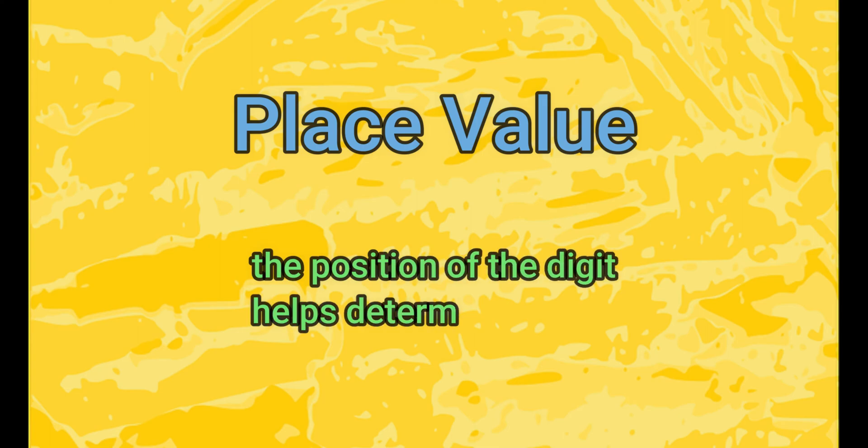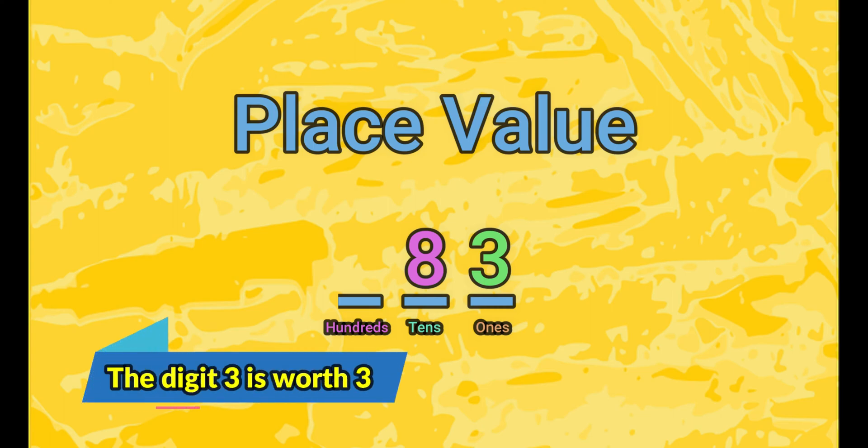Place value refers to how much each digit of a number is worth. The position of the digit matters a great deal and determines its value. For example, if we look at the digit 3, it can have different values depending on where it's placed in a number. In the number 83, the 3 is only worth 3 because it's located in the ones place.